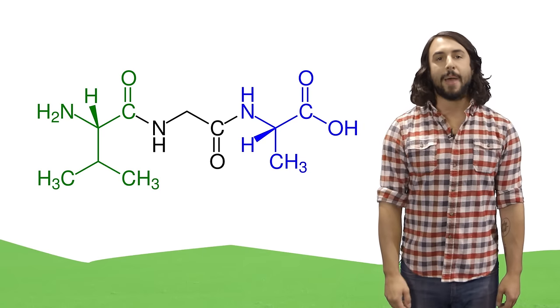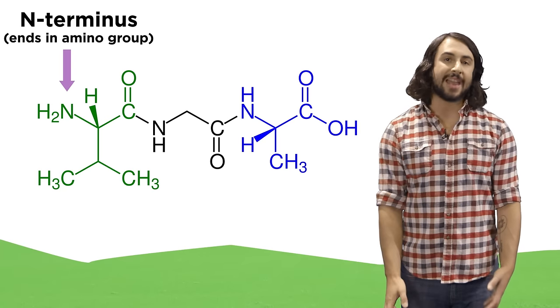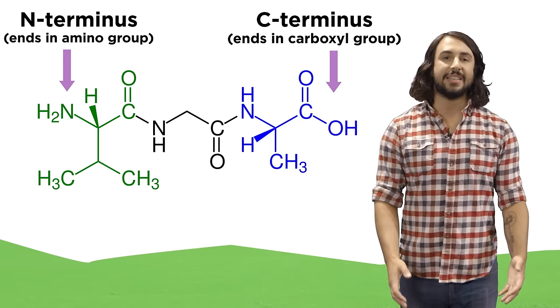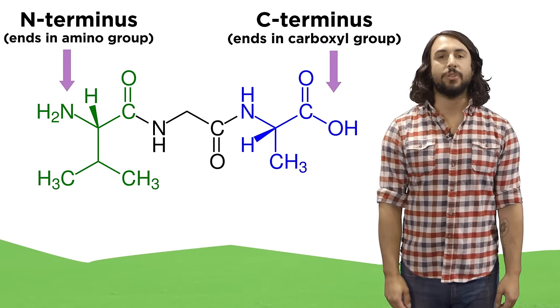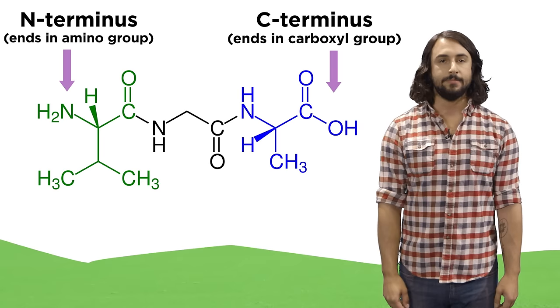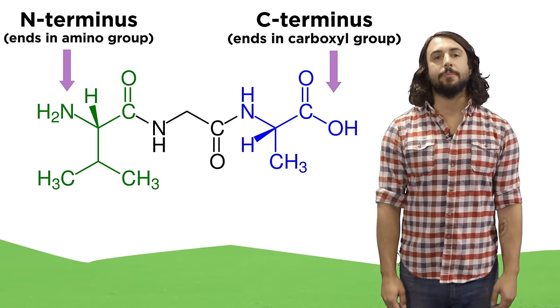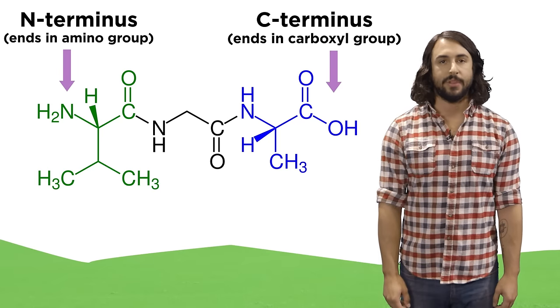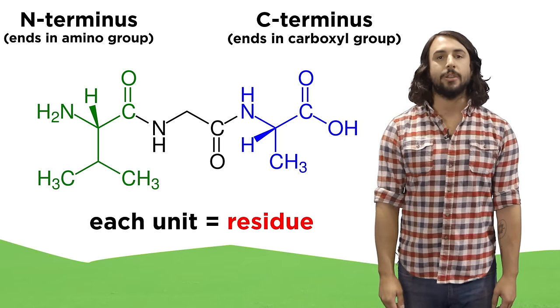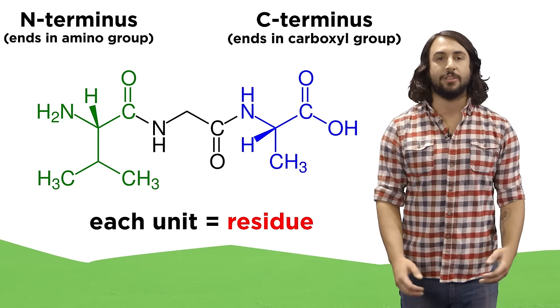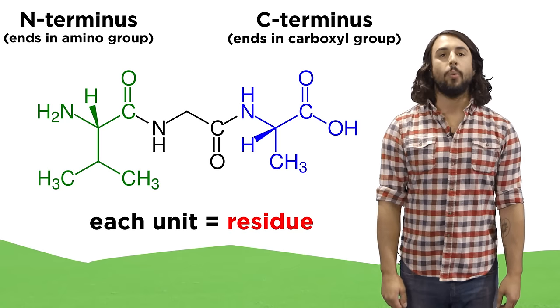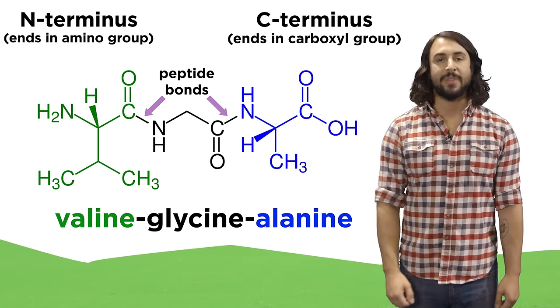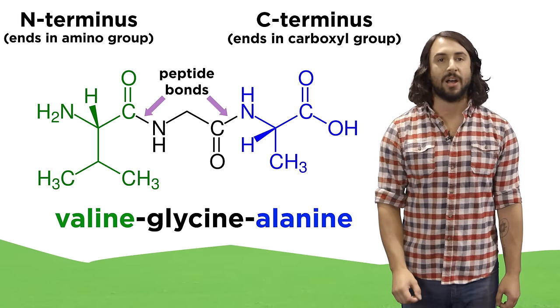When we look at any peptide we must notice that there is an N-terminus, meaning the side of the chain that ends with the amino group, and a C-terminus, the side that ends with the carboxyl group. By convention we typically write proteins with the N-terminus on the left and the C-terminus on the right. Each monomeric unit in the polypeptide is called a residue, so on this structure we should be able to differentiate between each individual residue and locate the peptide bonds that connect them.